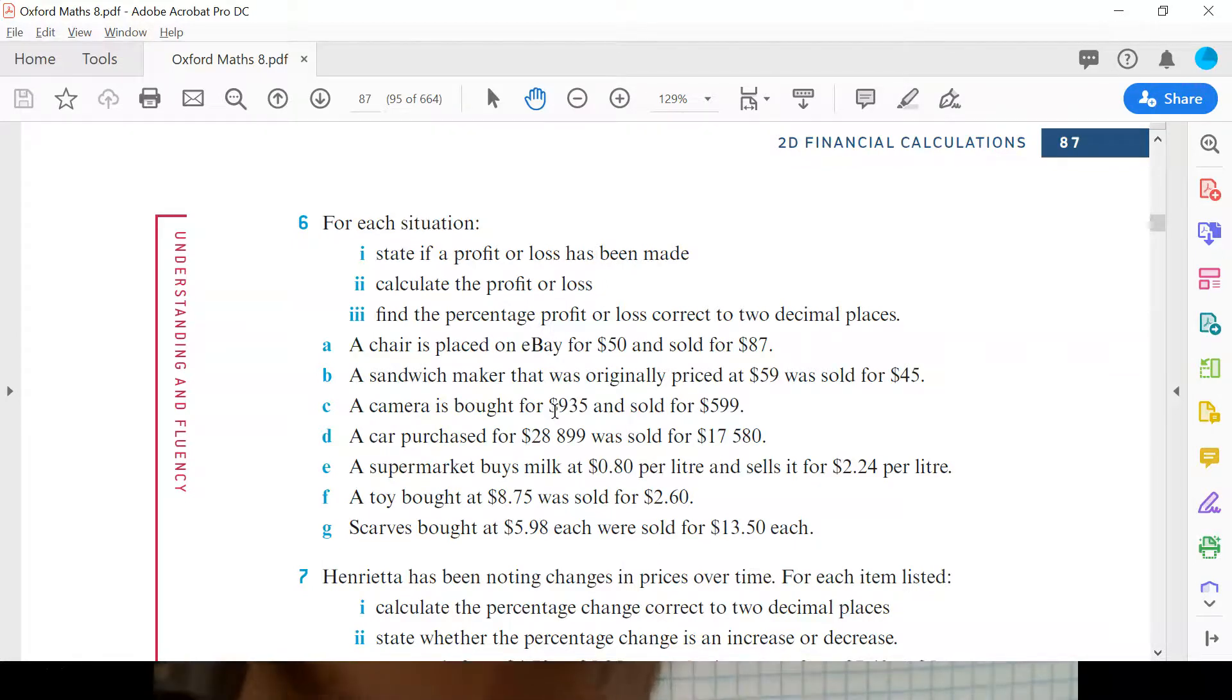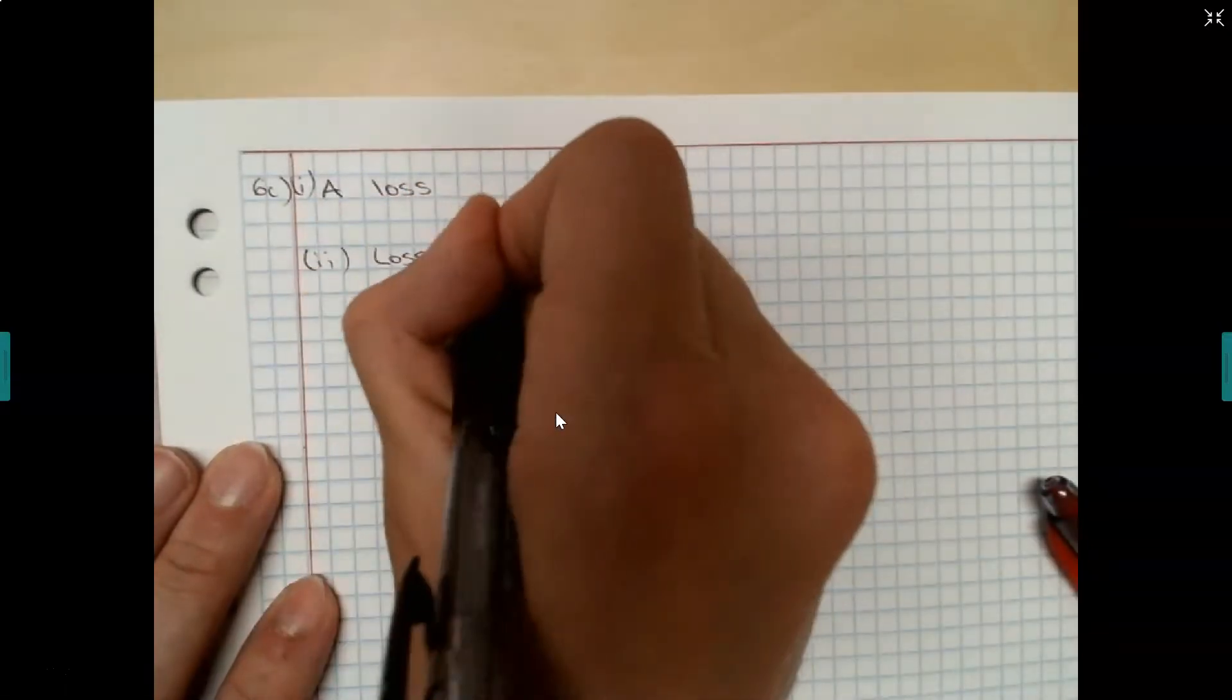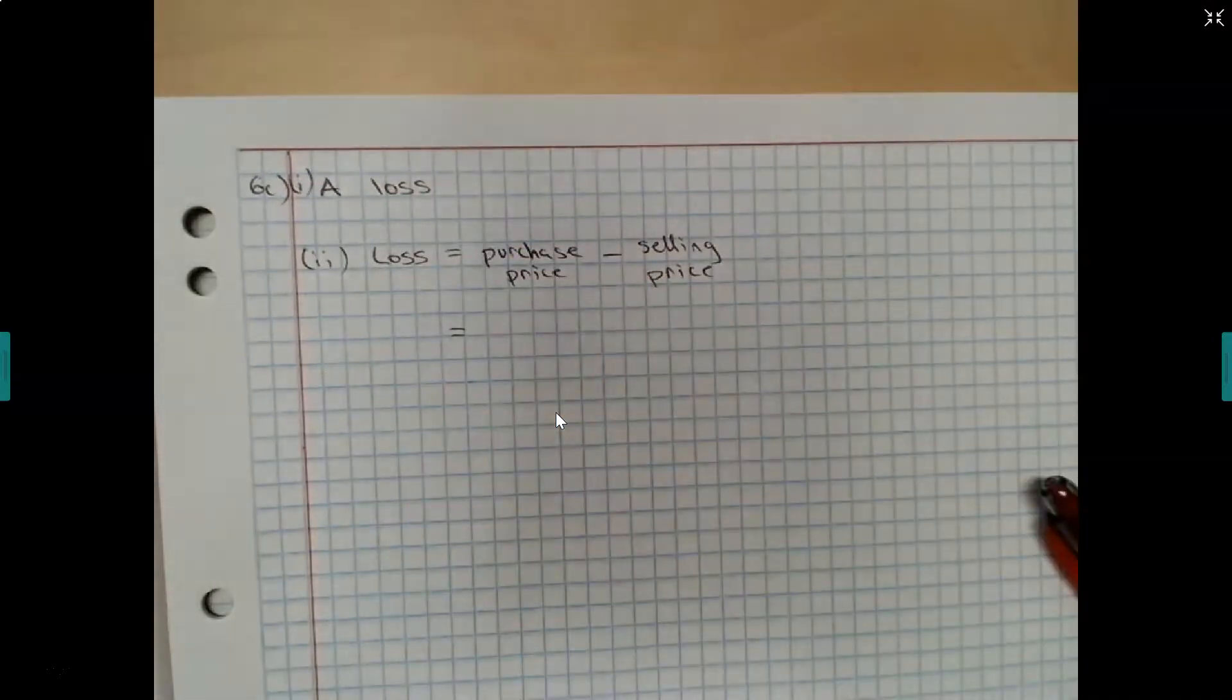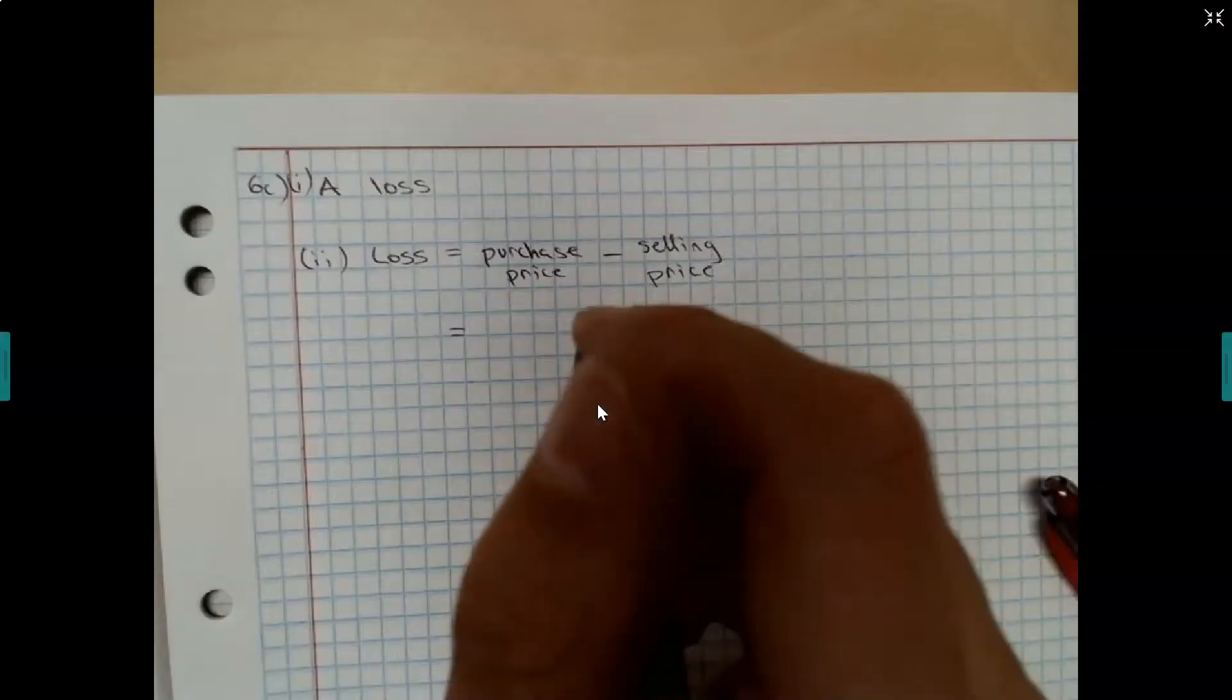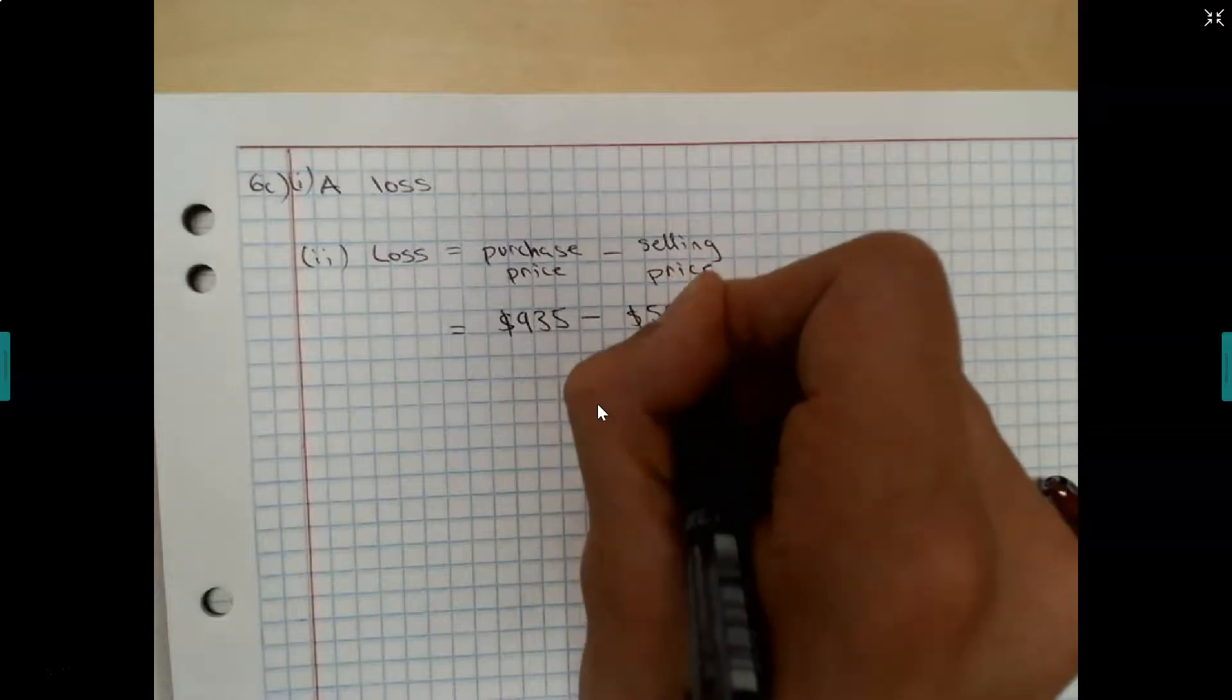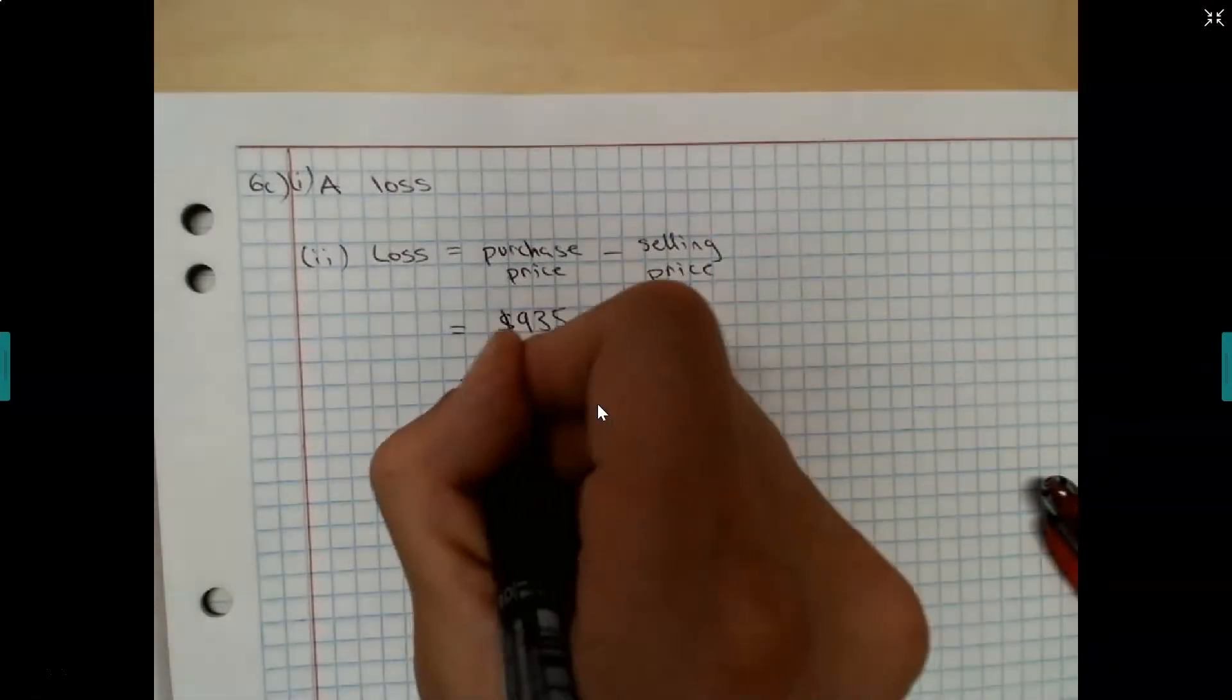Well, I just did the next bit. So part two says calculate the profit or loss. So the way I would show this if I was doing it in a test, I would write loss equals purchase price minus selling price, which is equal to the purchase price was $935 minus the selling price was $599, which is equal to $336.